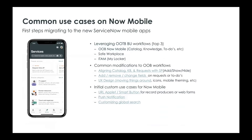Let's talk about common use cases around Now Mobile. When customers are implementing Now Mobile, the first thing to consider is how to leverage the out-of-the-box app. If you've watched our getting started academy, you'd know that out of the box your end users already have access to catalogs, KB articles, requests, and approvals — many of the things they can do on the employee service portal. Implementing Now Mobile is really about how to fill in the gaps and optimize end user use cases for the best possible mobile experience.